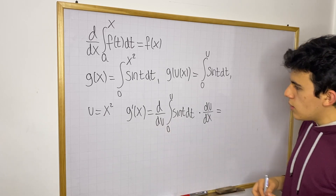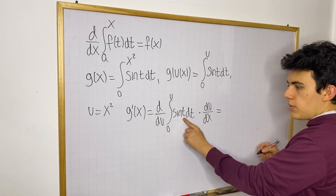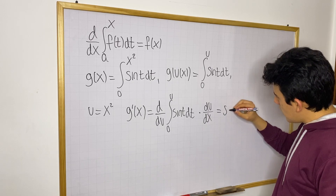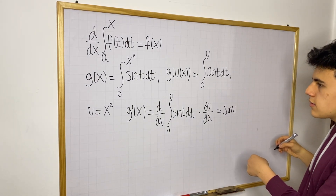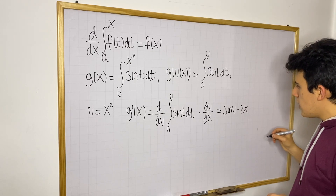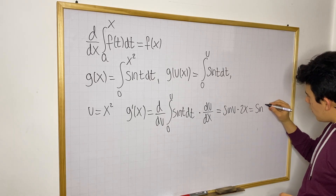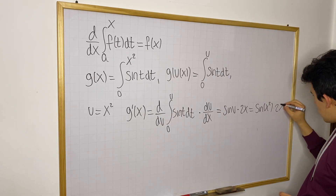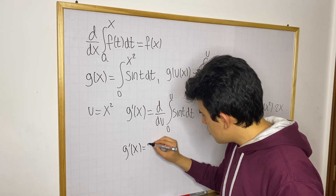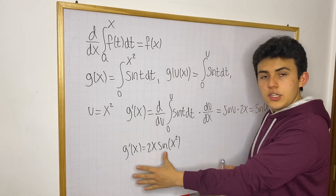By FTC2, the derivative of the integral from 0 to u of sine(t) dt is sine(u), since t is the dummy variable and we replace it with the actual input u. So we get sine(u) times du/dx, and du/dx equals 2x. Since u equals x², this becomes sine(x²) times 2x, so g'(x) = 2x · sine(x²).